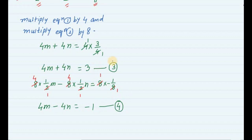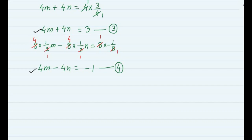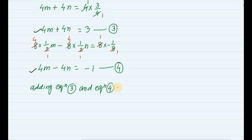Now observe equation number 3 and equation number 4. Equation 3 has plus 4n and equation 4 has minus 4n, so we add them to eliminate n. Adding equation 3 and equation 4: 4m plus 4n equals 3, and 4m minus 4n equals minus 1.